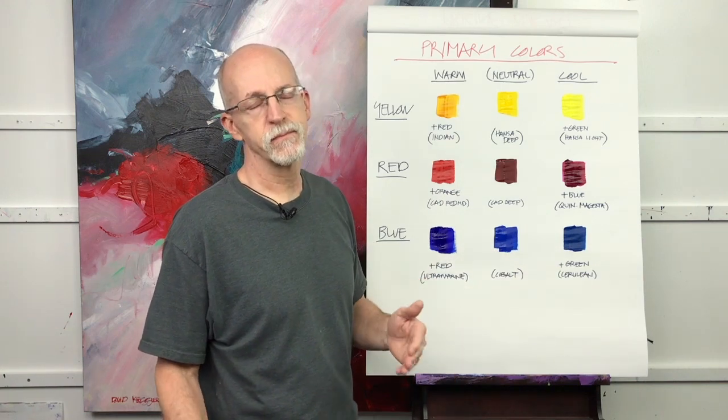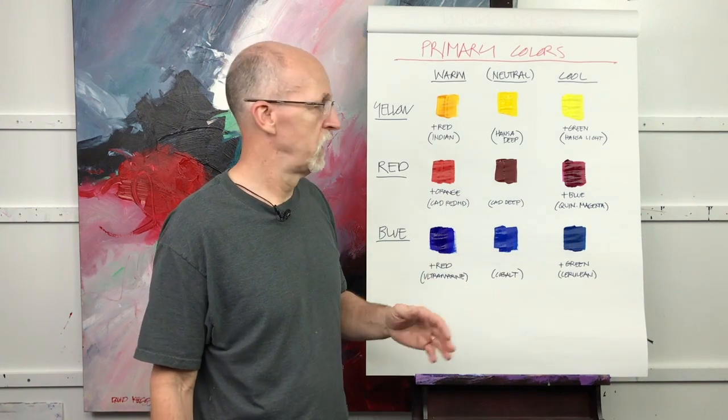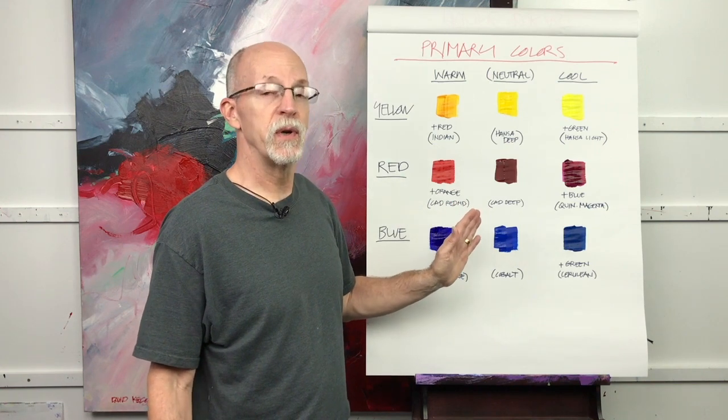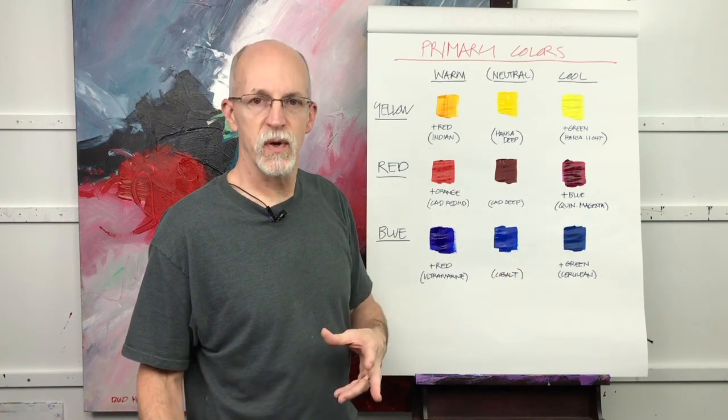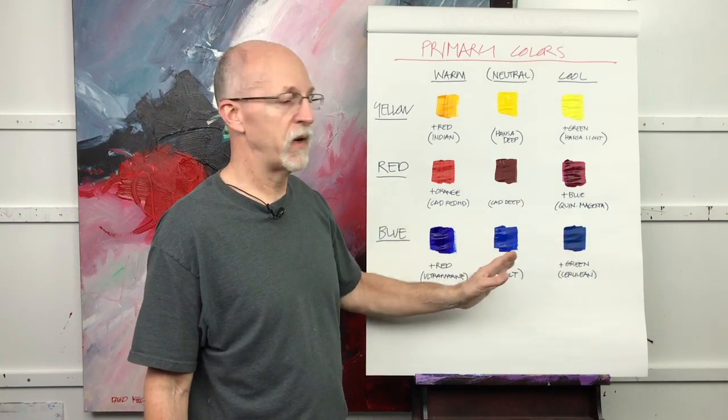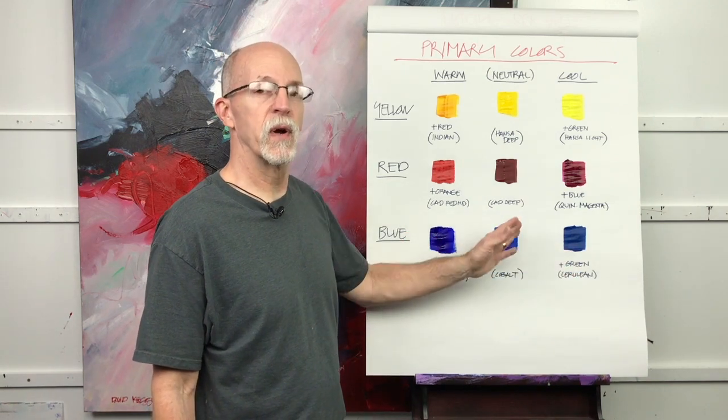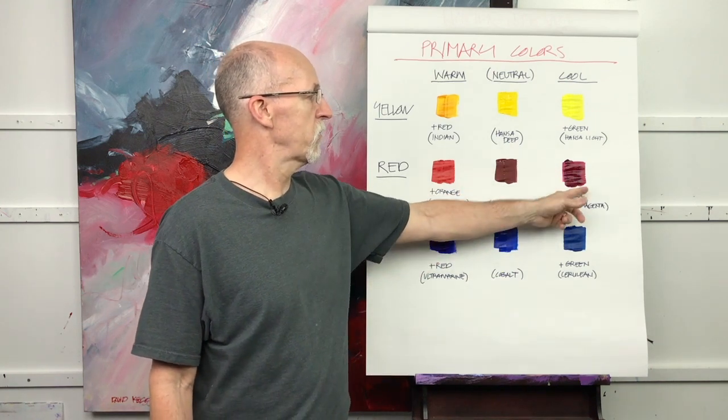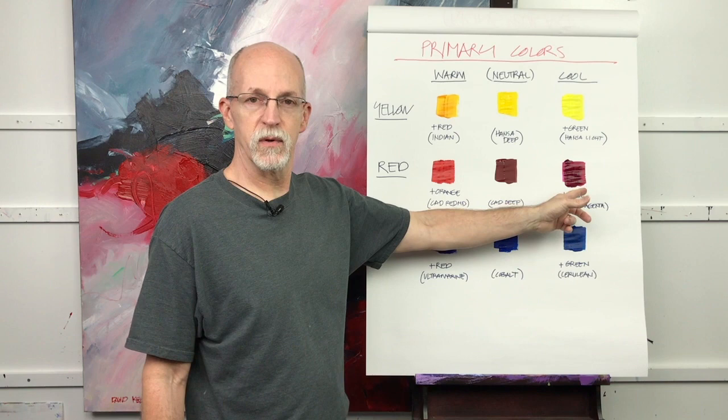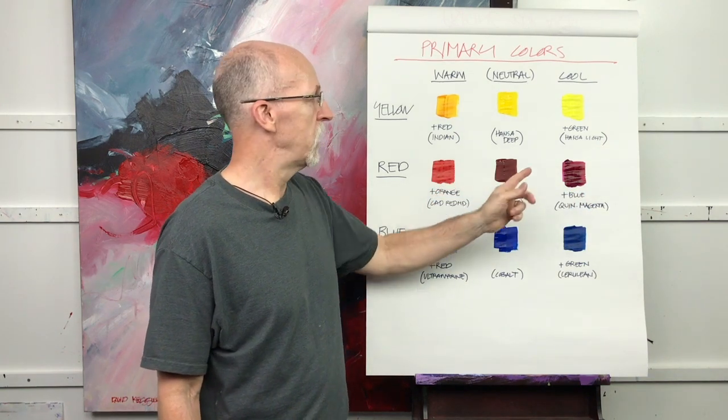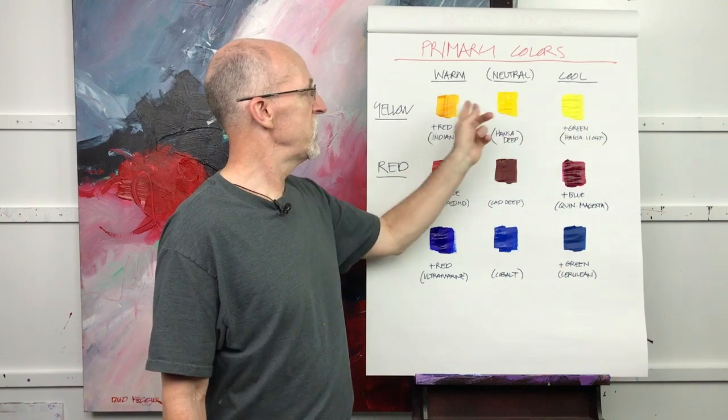But each one of these has its own unique properties and can be used in a special way in a painting. Cerulean blue is going to be very different than ultramarine blue if you're trying to make violet, same way with the reds. You can only make really a good violet with the cool red and not with the warm red.